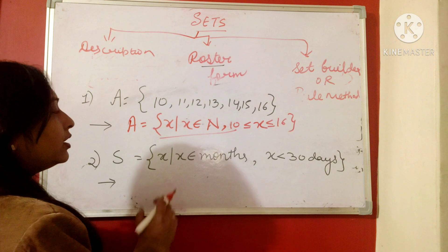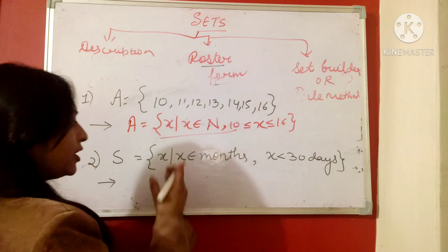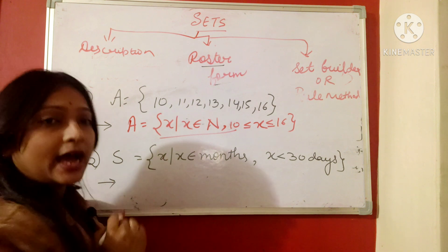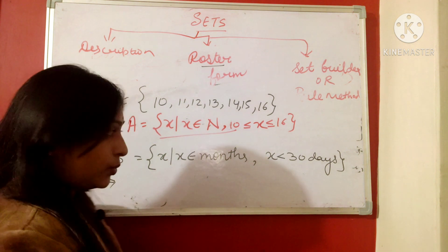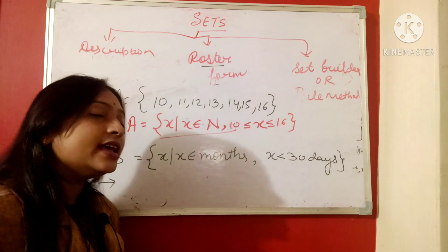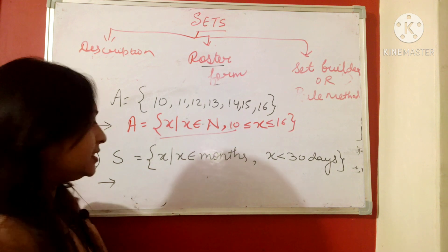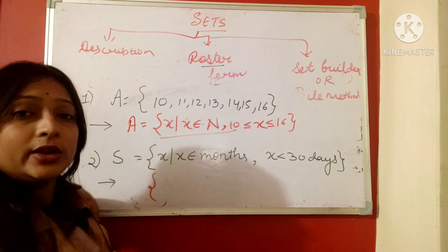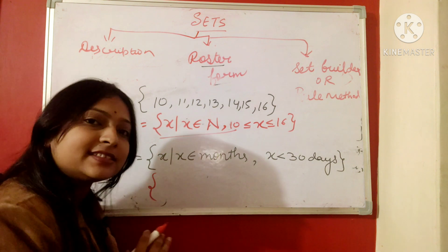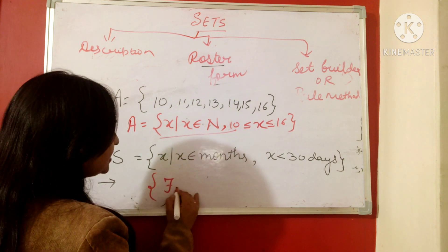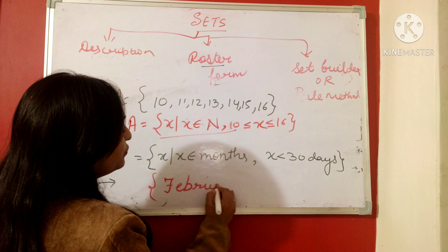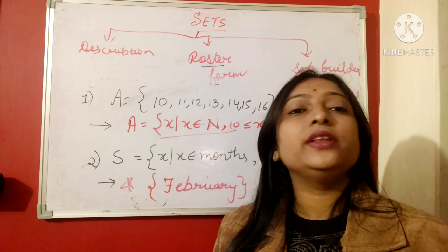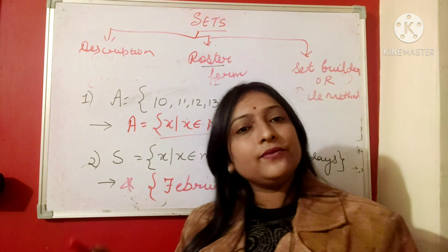Now if we have the set builder form: x such that x is a month with less than 30 days, and we need to write the roster form — we know only one month has fewer than 30 days, and that is February. So the answer is {February}. These are the ways in which we represent a set.